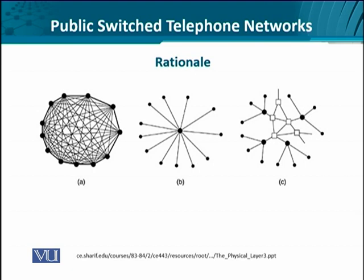The basic rationale behind the whole PSTN infrastructure was to reduce the number of wires. As you can see in diagram A, it's a full mesh, and then you see a star topology. When we move from full mesh to star, we do reduce the number of wires, but there is a consequence: the length of each wire becomes unwieldy. That is why we need a hierarchical structure as shown in diagram C — with local exchanges, regional exchanges, and country-level exchanges. This is the biggest rationale on the basis of which PSTNs are realized.